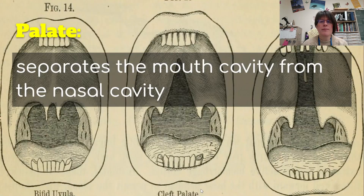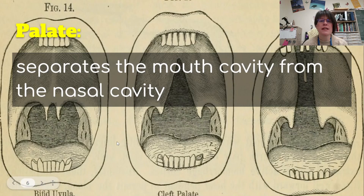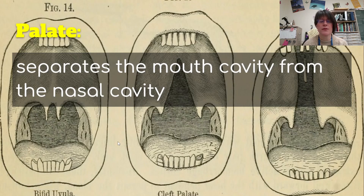In the back of your mouth, there is something called the palate. You can see in this second picture, especially in the third over here, there is a hole in the palate. The palate has a very special function — it separates the mouth cavity from the nasal cavity. This is to prevent food from going up your nose, which can still happen at times.